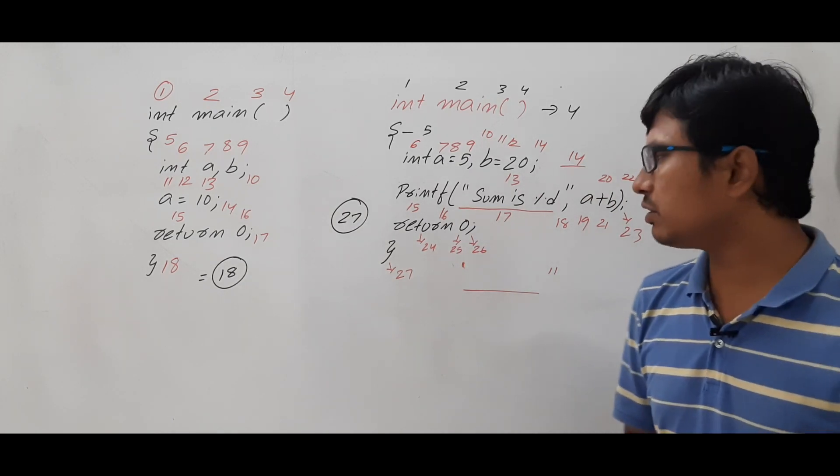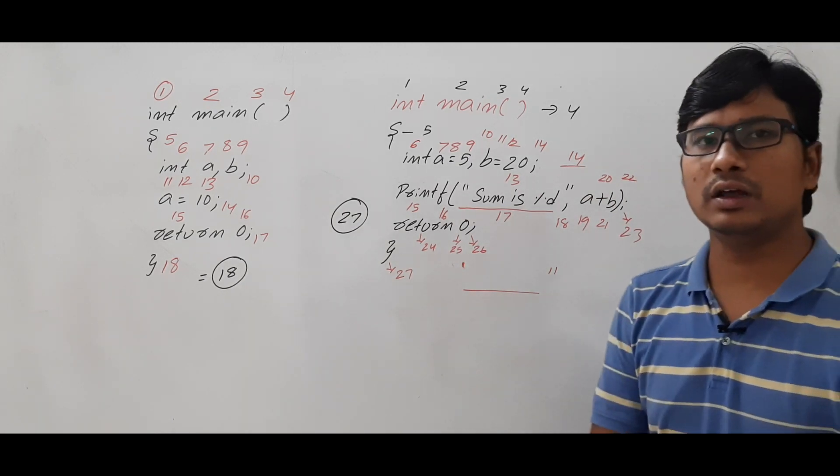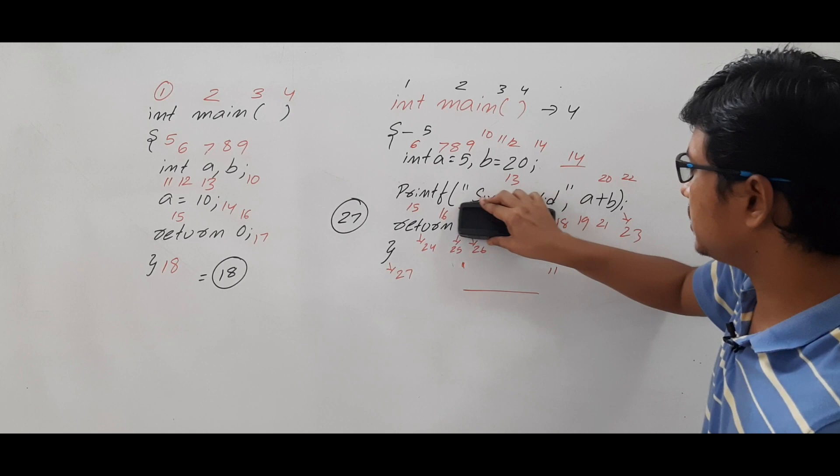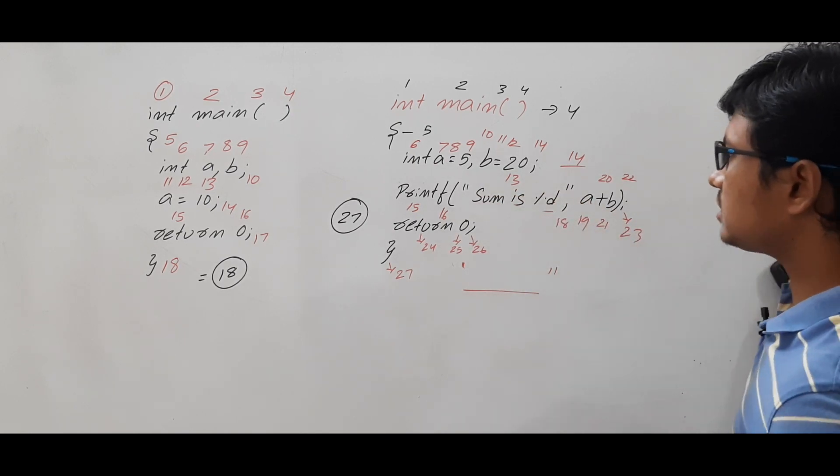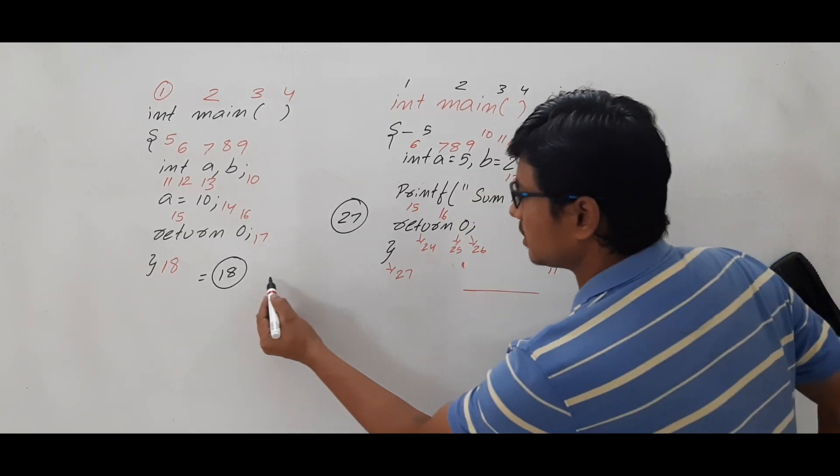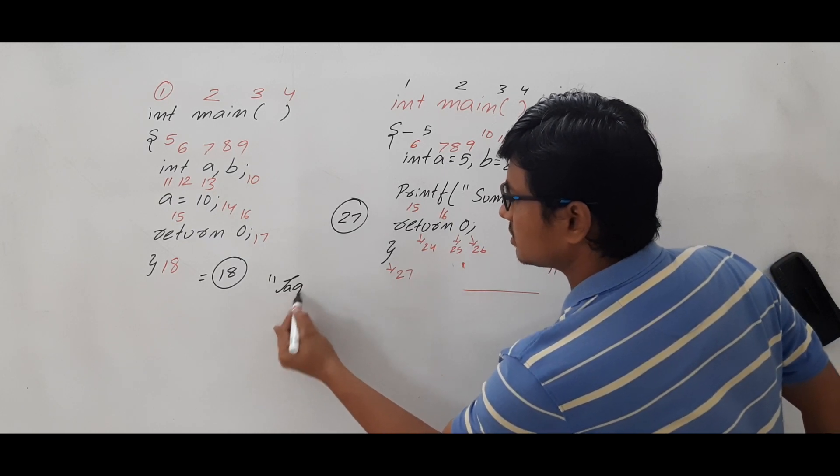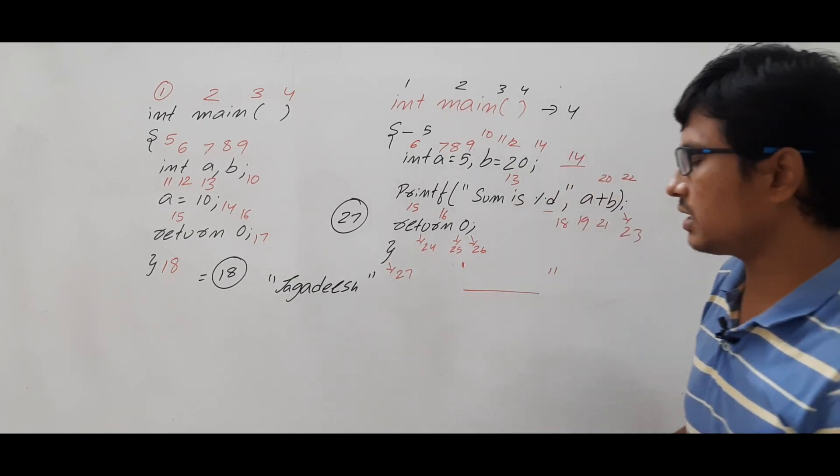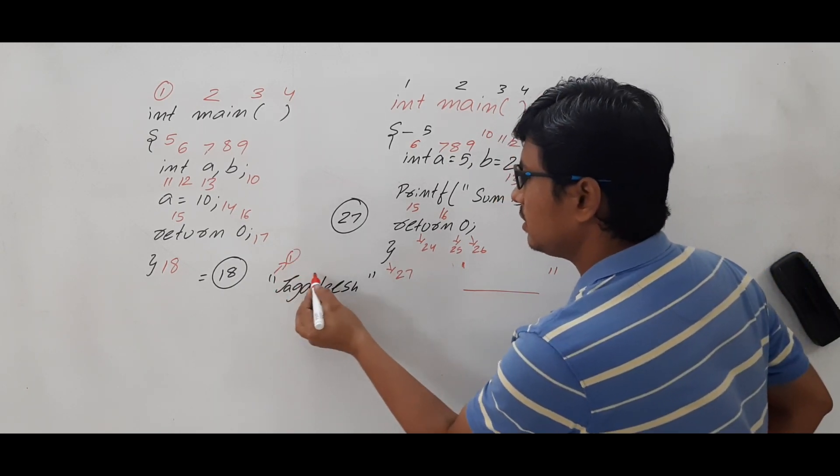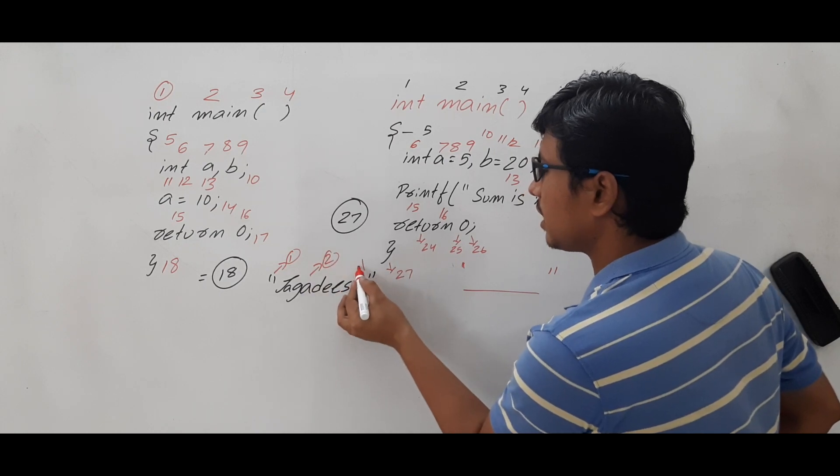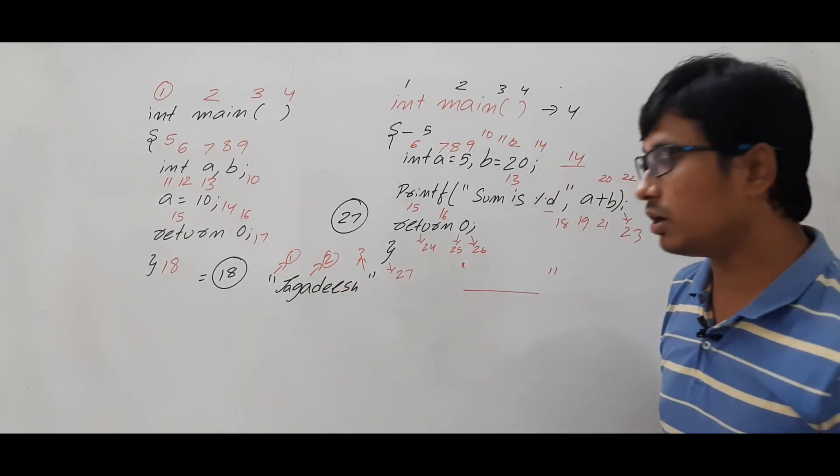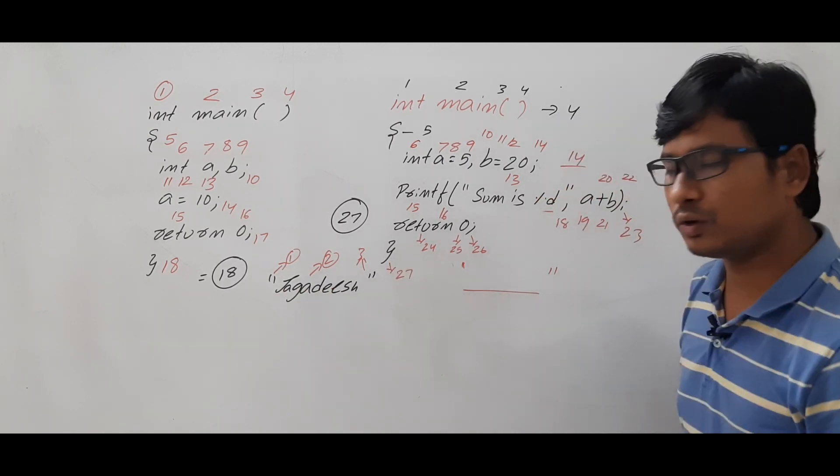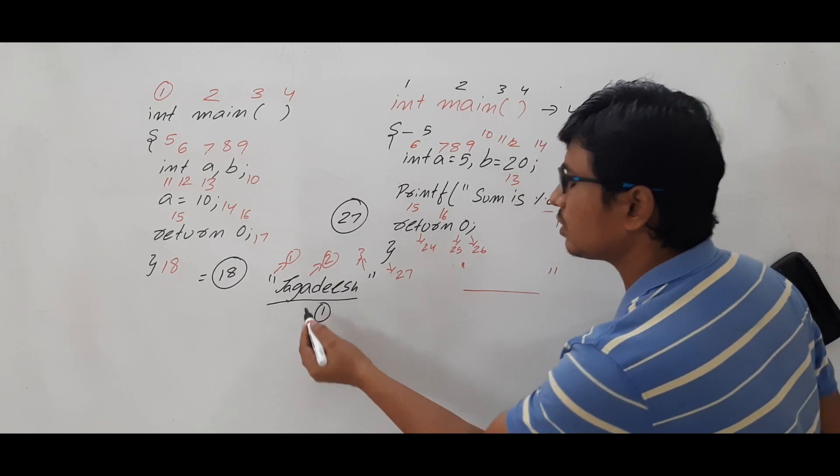What is the mistake everyone will do if you are learning this compiler design course for first time? What is the mistake usually people will do is that they will consider this double quotation, let's take that something is there, let's take that Jagadish is there. The thing they will do - the mistake is that they will consider this is one token, this is another token, this is another token, so totally we got three tokens. But it is wrong. Whatever is there within this double quotation open and close, whatever is there, is totally a single token.